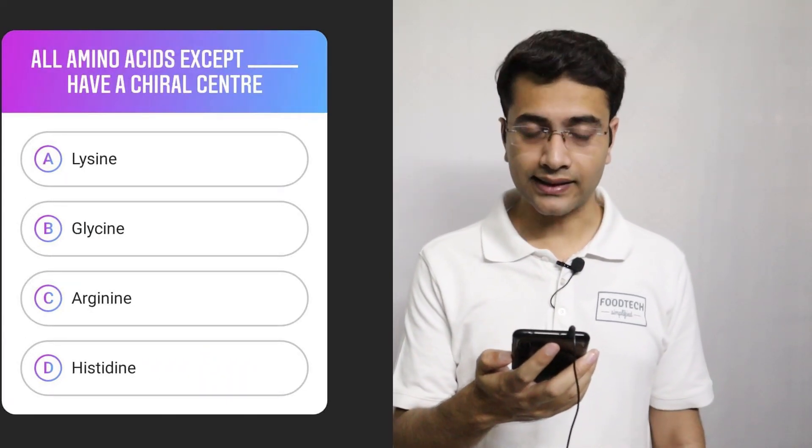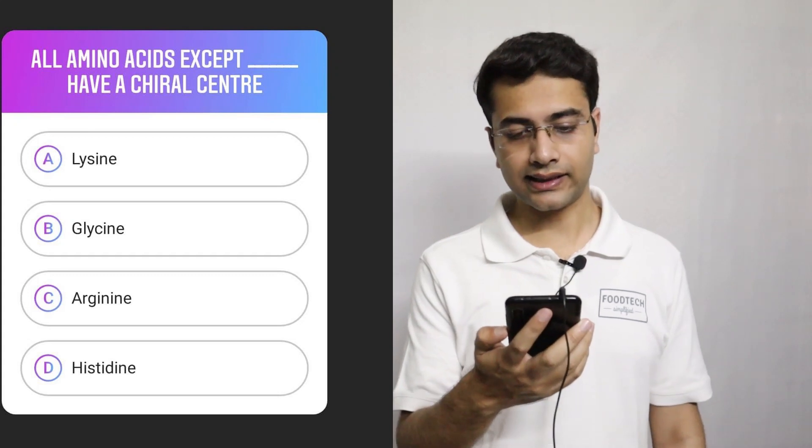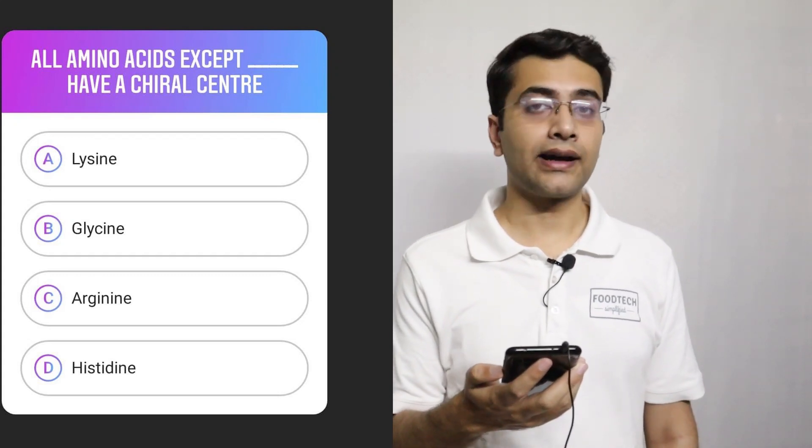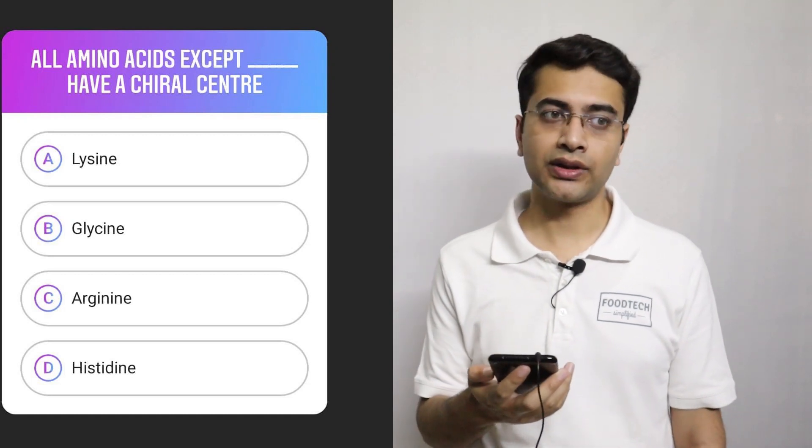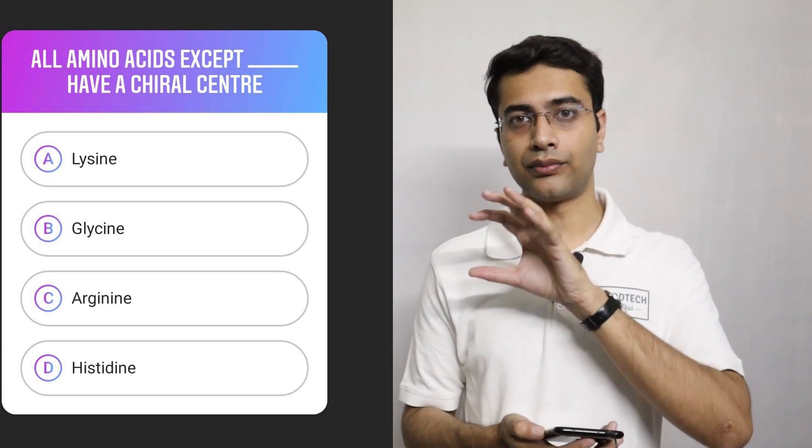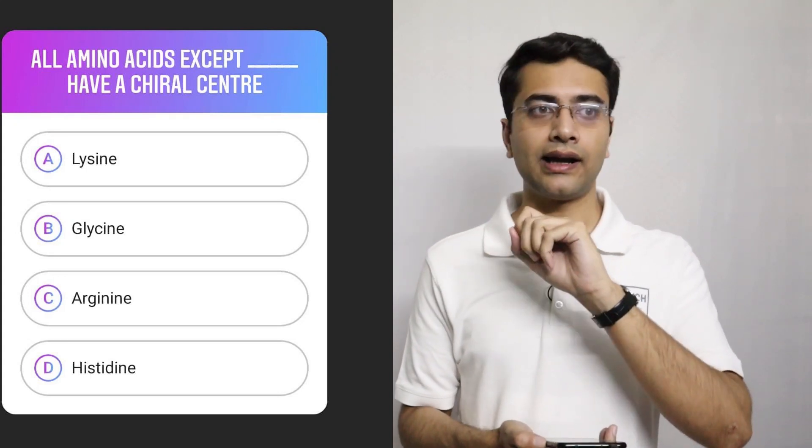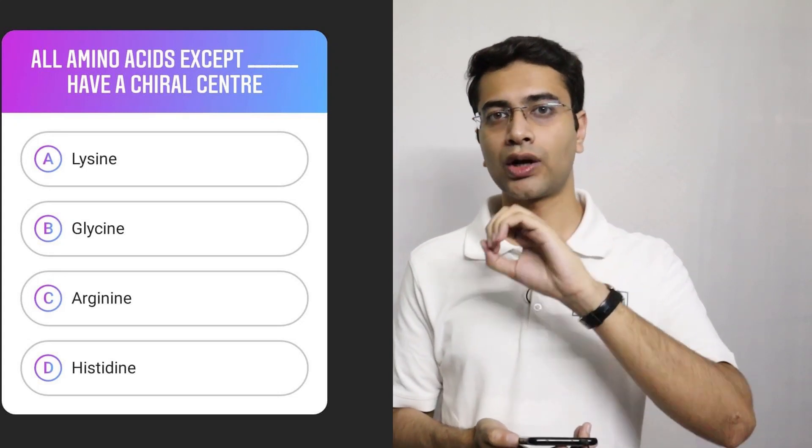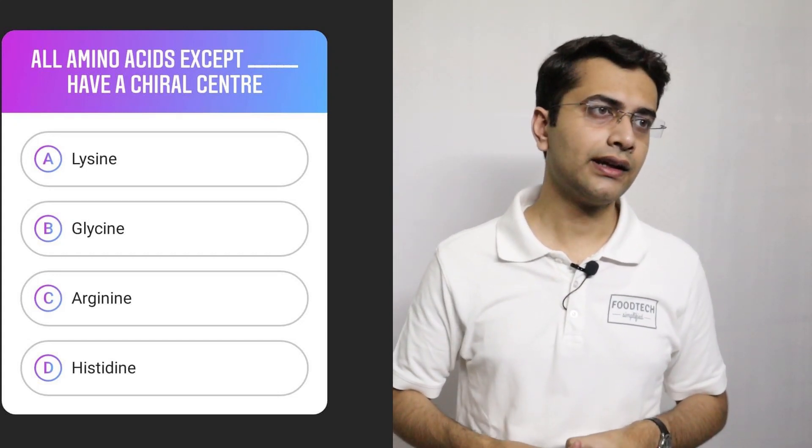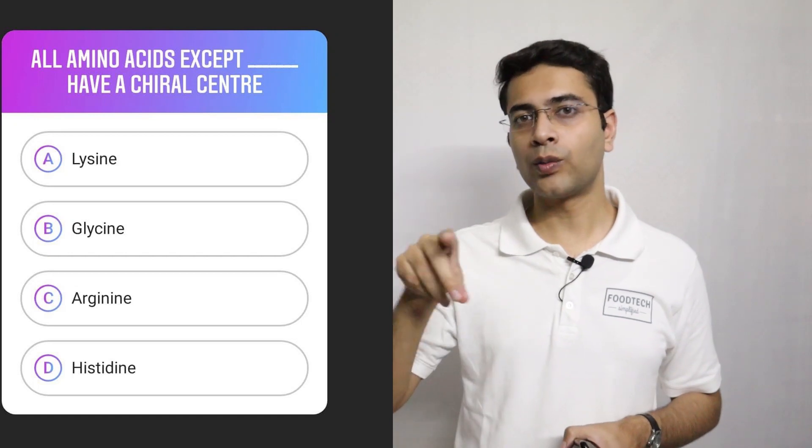Moving on to the next one. All amino acids except dash have a chiral center. Now a little bit of chirality or chiral center. So if in a molecule there is a carbon atom in the center and carbon has four bonds or four electrons in the outer shell, right? So it can form four bonds.